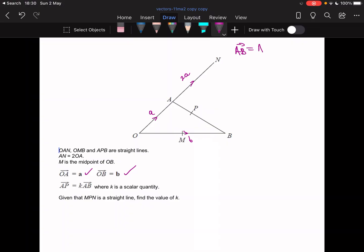And I'm going to start by working out AB. So AB is equal to AO plus OB. So AB is equal to minus a plus b.